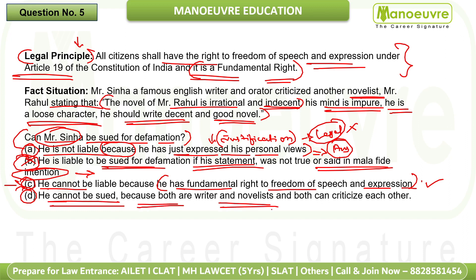Option D says he cannot be sued because both are writers and can criticize each other — but that is a moral understanding, not a legal principle, so Option D is also eliminated. The correct answer is Option A: Mr. Seena is not liable because he has merely expressed his personal view.